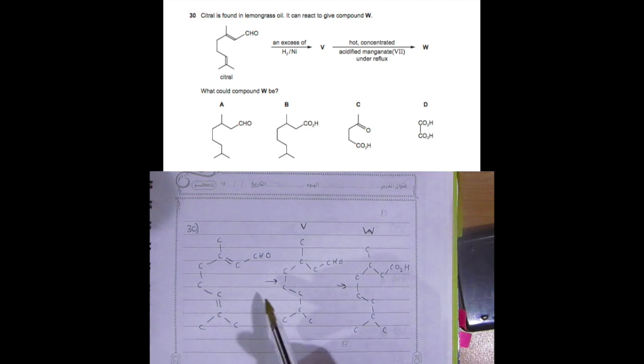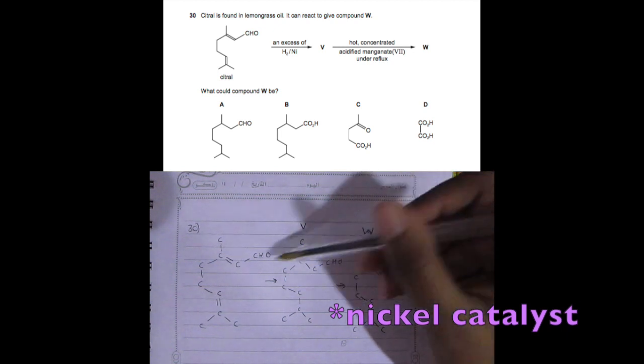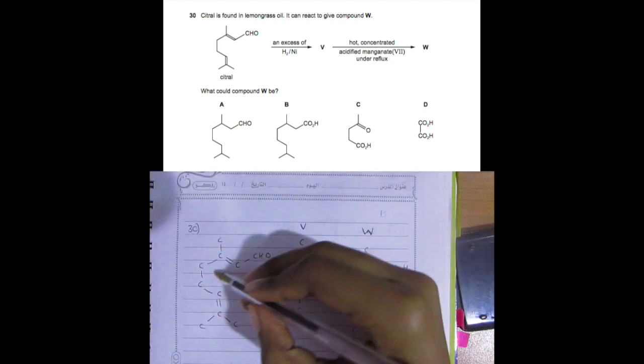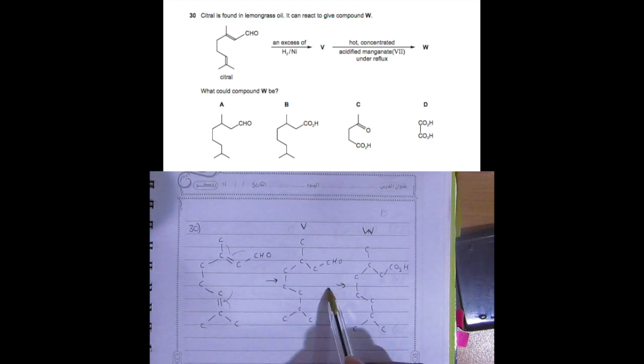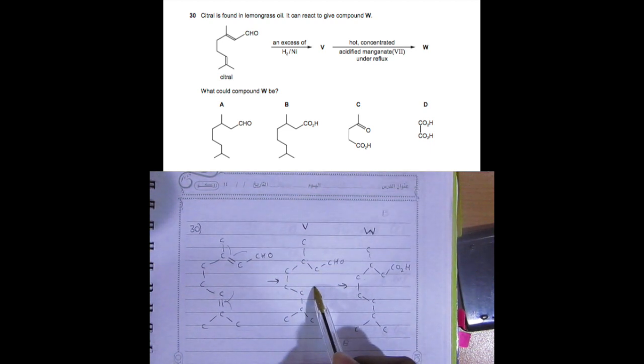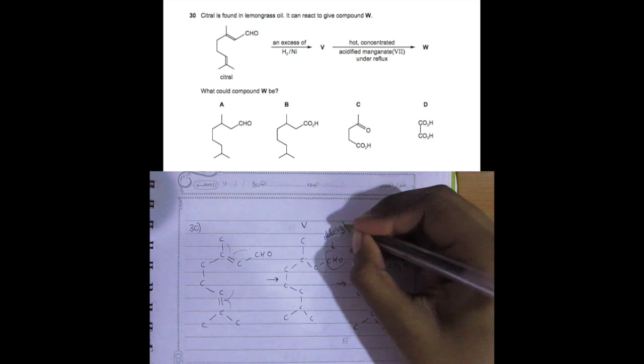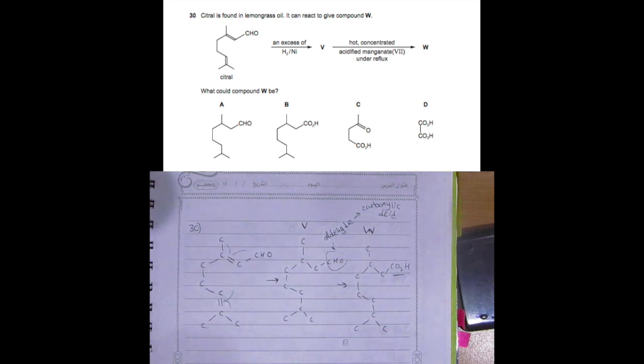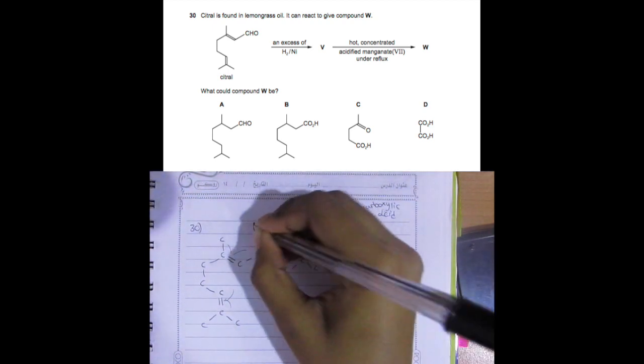Question 30. What could compound B W B - so here when you add an excess of hydrogen and nickel catalyst, it's going to open up these double bonds and it's going to have hydrogen in it. It's going to open them up, so it's going to end up like this. Then when you add the hot concentrated manganate, this is an aldehyde, and when it gets oxidized it turns into a carboxylic acid.